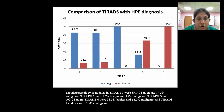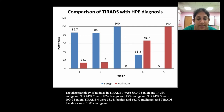Comparing histopathology nodules with the TIRADS system: TIRADS 1 nodules were 85% benign and 14% malignant. TIRADS 2 nodules were 85% benign and 15% malignant. TIRADS 3 lesions were 100% benign. TIRADS 4 lesions were 33% benign and 66% malignant. TIRADS 5 lesions were all malignant.